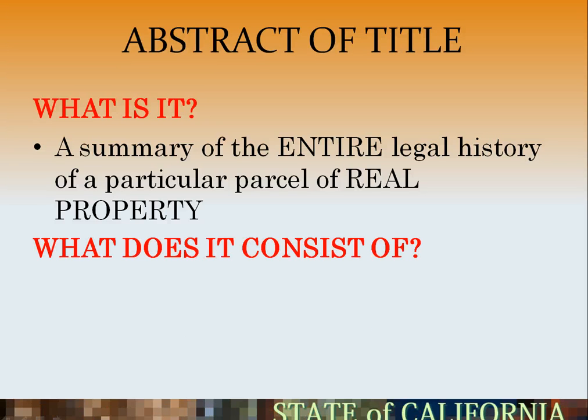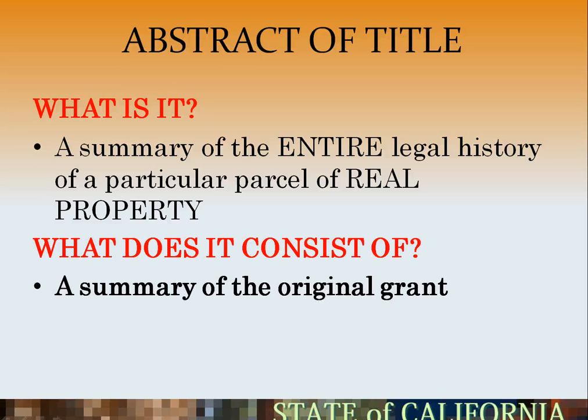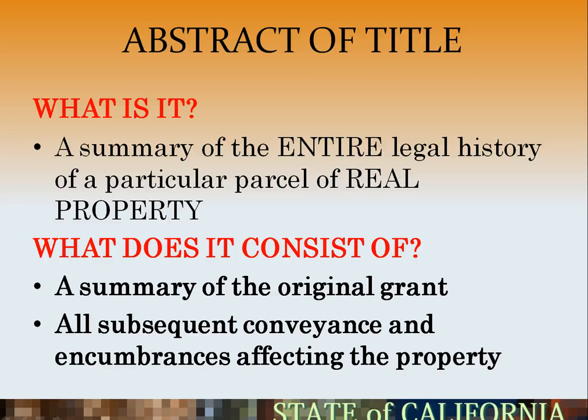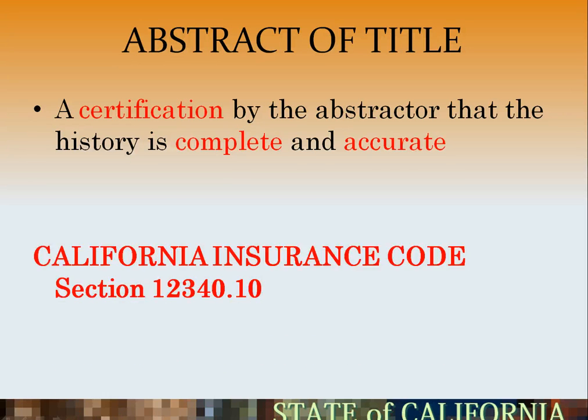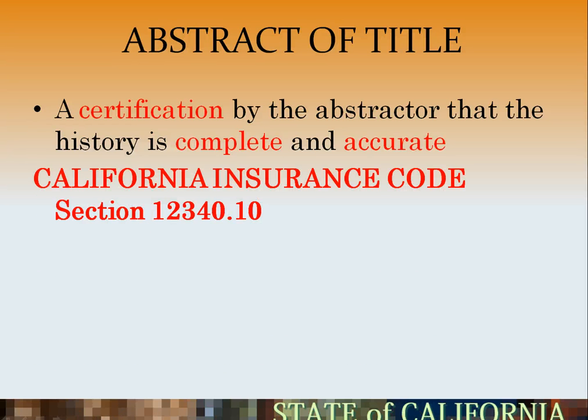What does it consist of? A summary of the original grant, all subsequent conveyances and encumbrances affecting the property, and a certification by the abstractor that the history is complete and accurate.